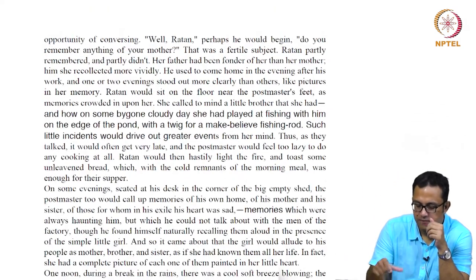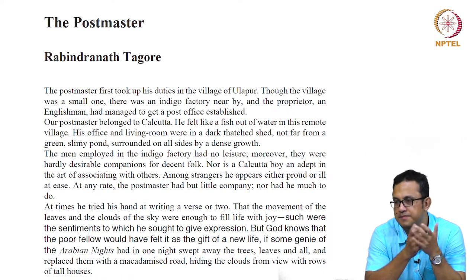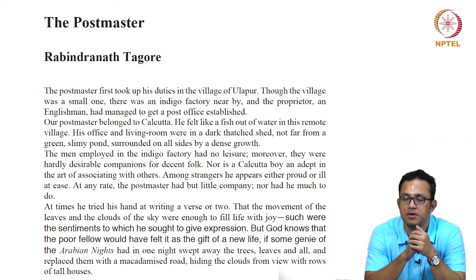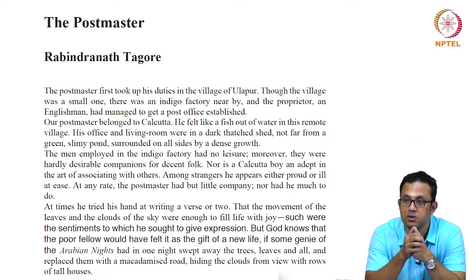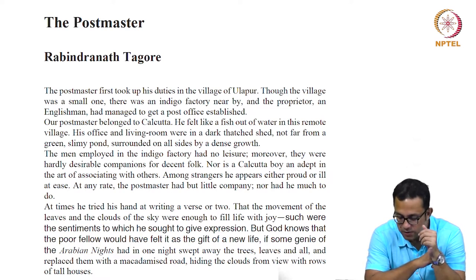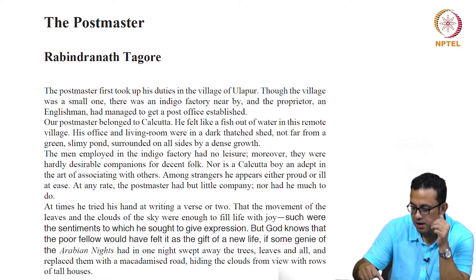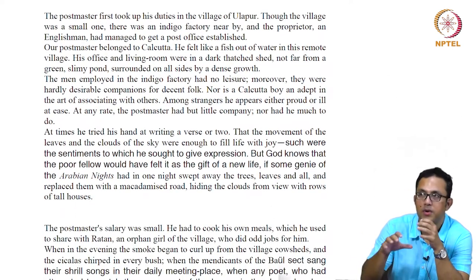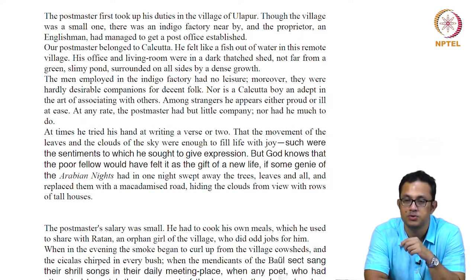The reference to Arabian Nights is interesting: we are told the postmaster tried his hand at writing poetry because he had no companions. If he had the wish-fulfillment option, he would have asked the genie of Arabian Nights to get rid of all the trees and leaves around him and replace them with a metalled road — a pukka road — and rows of tall houses. This shows how the geography in which you grow up informs the imagination to a great extent.